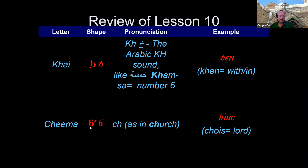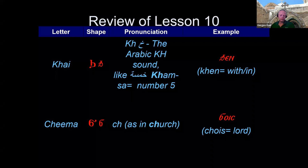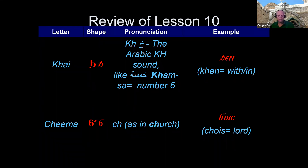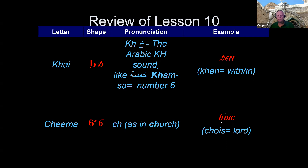Chima looks like the number six. A way to remember it is it looks like the front of a choo-choo train, with the tail on top being smoke coming out of the engine — and the choo-choo train goes 'choo-choo.' So Chima is pronounced 'ch,' like a T-C-H or like the 'ch' in the English word 'church.' For example, the word 'choice' means 'Lord,' as in 'ephchoice' meaning 'the Lord.'